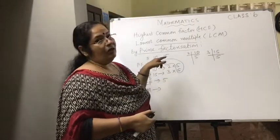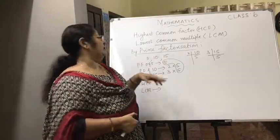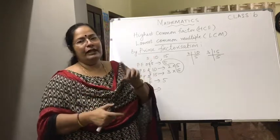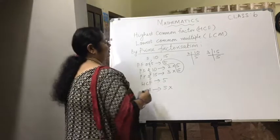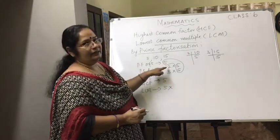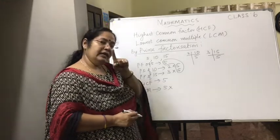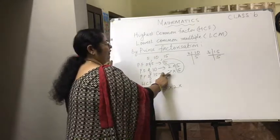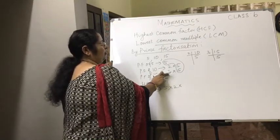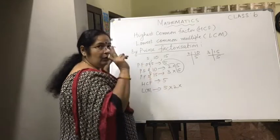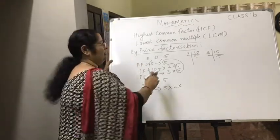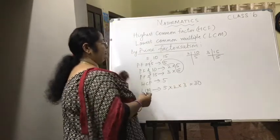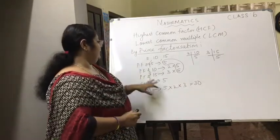Looking at each factor: 5 occurs once in each of the three numbers, so the maximum is 1. The factor 2 occurs only in 10, and only once, so we take one 2. The factor 3 occurs only in the prime factorization of 15, and only once, so we take one 3. Now we find the product: 5 × 2 = 10, 10 × 3 = 30. So 30 is the LCM of 5, 10, and 15, and 5 is the HCF.